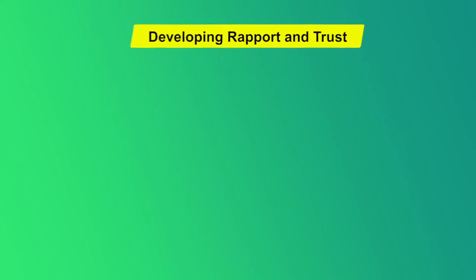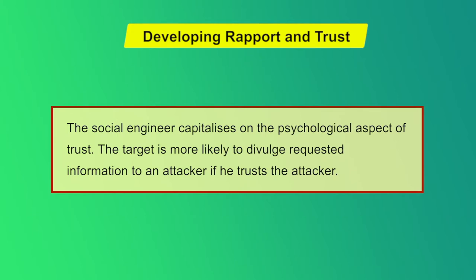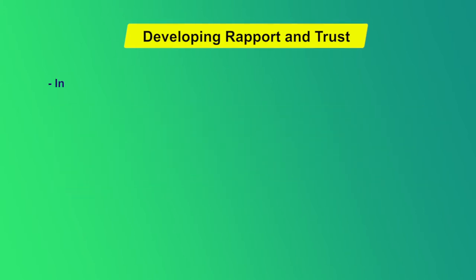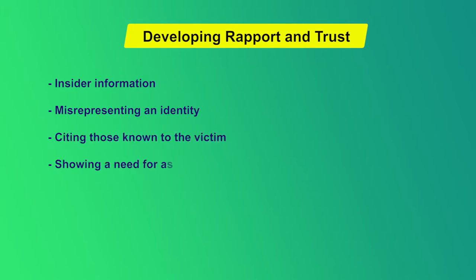The second step is Developing Rapport and Trust. The social engineer capitalizes on the psychological aspect of trust — the target is more likely to divulge requested information if they trust the attacker. Rapport and trust development can be done by using insider information, misrepresenting an identity, citing those known to the victim, showing a need for assistance, or occupying an authoritative role.